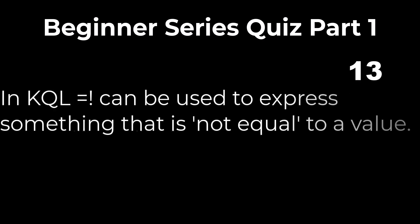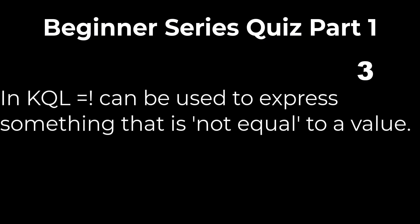Problem 7: In KQL, equal followed by an exclamation point can be used to express something that is not equal to a value. While the exclamation point paired with the equal symbol together represents not equal to a value, the order matters and it should be reversed. The answer is false.